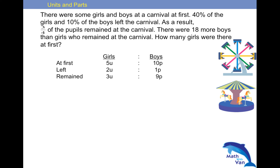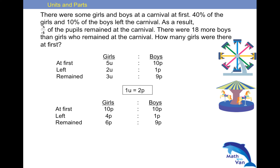We're on our way to solve the question. Since we have found out that 1u equals 2p, substitute inside. For the girls, instead of 5u, we will have 10 parts. Take away the difference — what do we have? 3 parts. So 3 parts will be equal to 18, because we are told there were 18 more boys than girls. So what is 1 part? 1 part is 6, so 10 parts is 60. Basically, there were 60 girls at first.